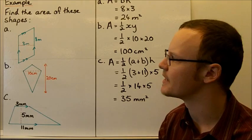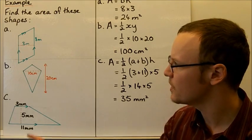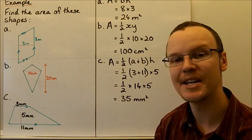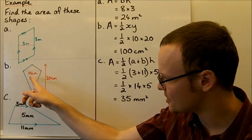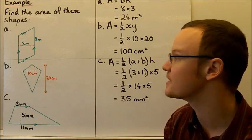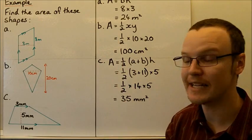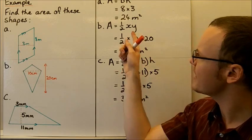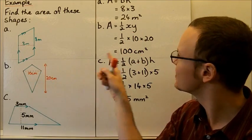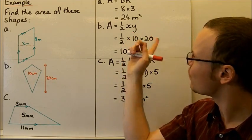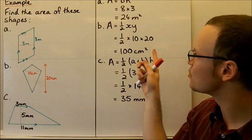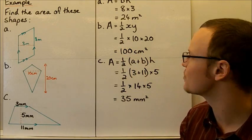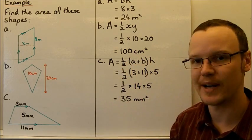Looking at the next part of the example, we've got a kite. One of the diagonals is 10 centimetres and the other diagonal is 20 centimetres. Using the formula for the area of a kite — a half times X times Y — X is 10 centimetres and Y is 20 centimetres. So a half times 10 times 20 is going to be 100 square centimetres.